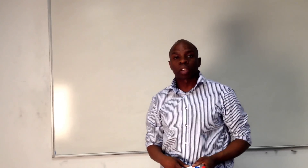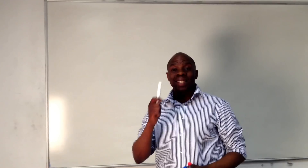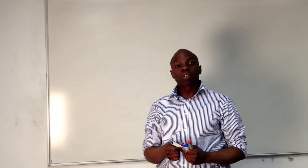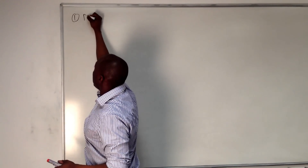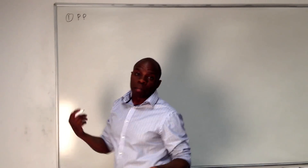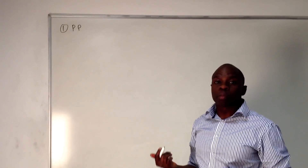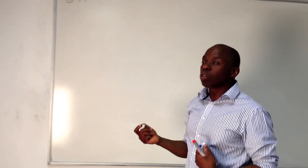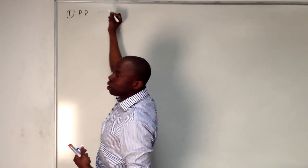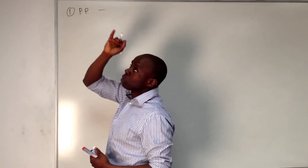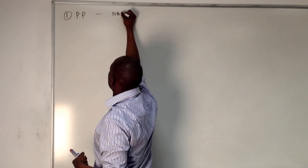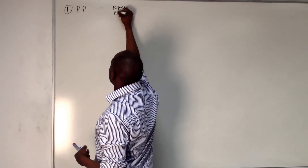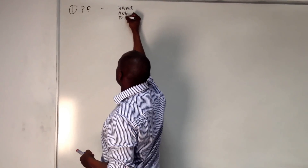So history taking involves the Calgary-Cambridge framework and 10 easy steps. We start off with number one: PP, which stands for patient profile. Patient profile normally takes into account three identifying factors which are an absolute must — name, age, and date of birth.